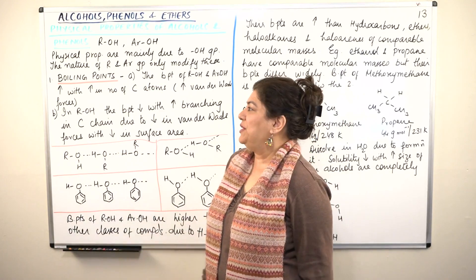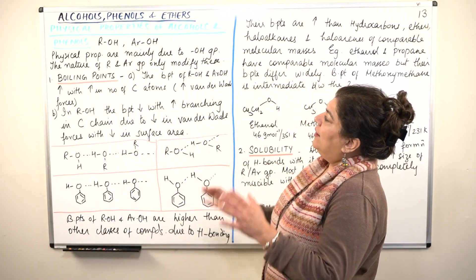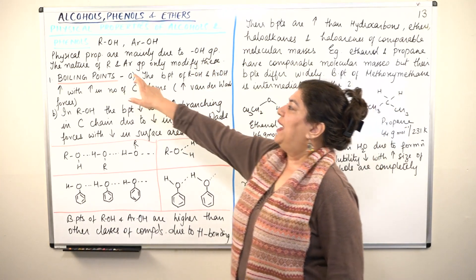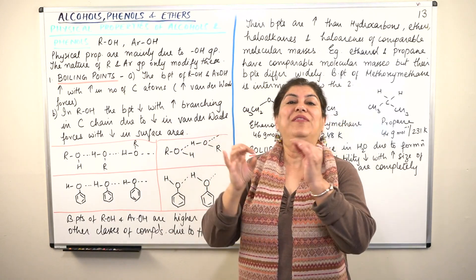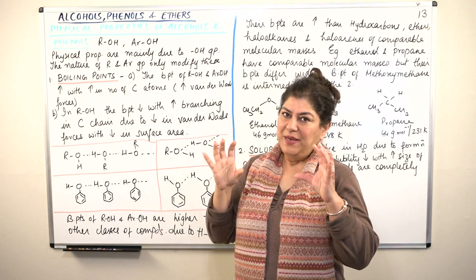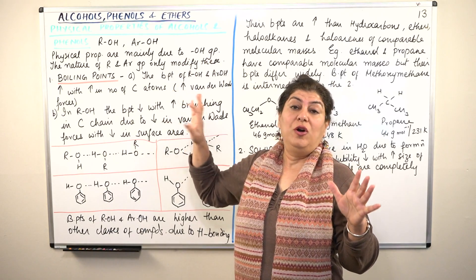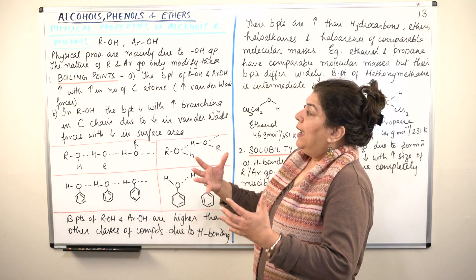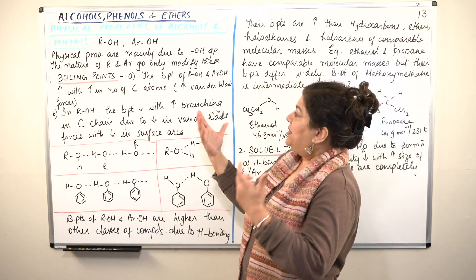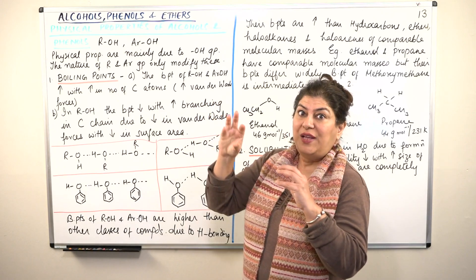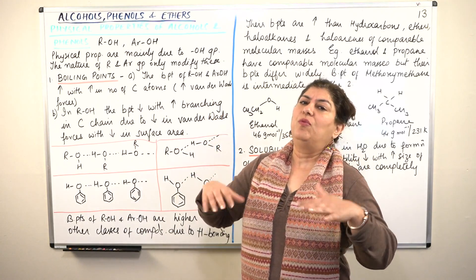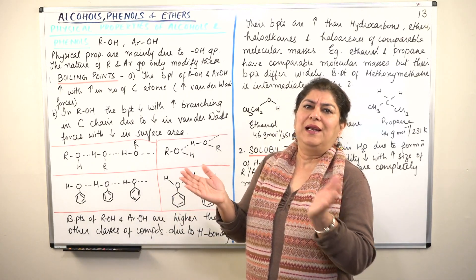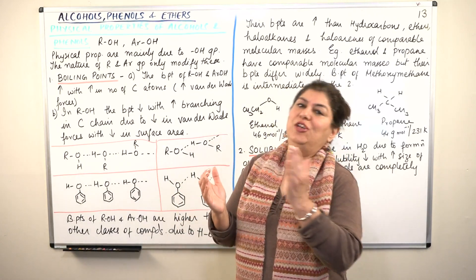Physical properties are mainly due to the OH group. The nature of the alkyl and the aryl group only modifies these properties. The basic properties arise because the OH group forms hydrogen bonds. The size of the alkyl and aryl group will only modify these properties slightly, increasing or decreasing them a little.